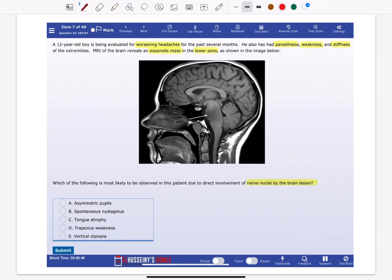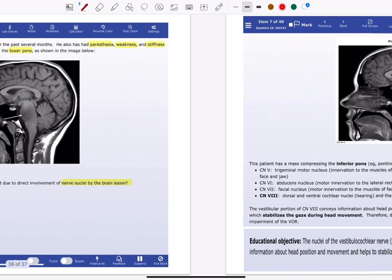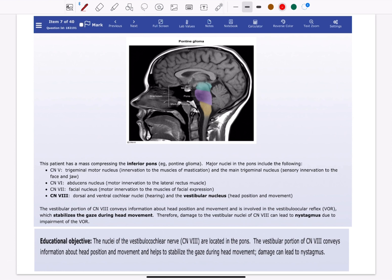The correct answer is spontaneous nystagmus, option B. The patient has a mass compressing the inferior pons, a pontine glioma.